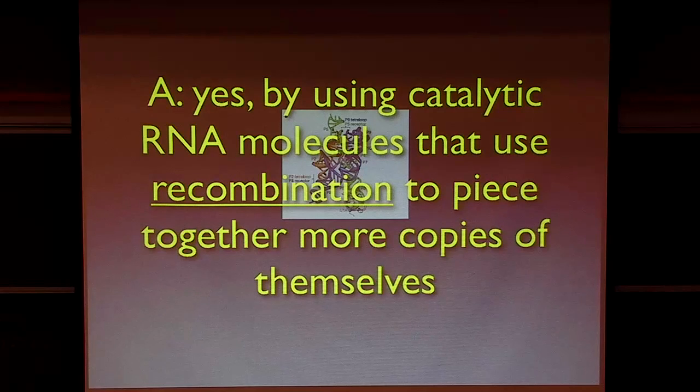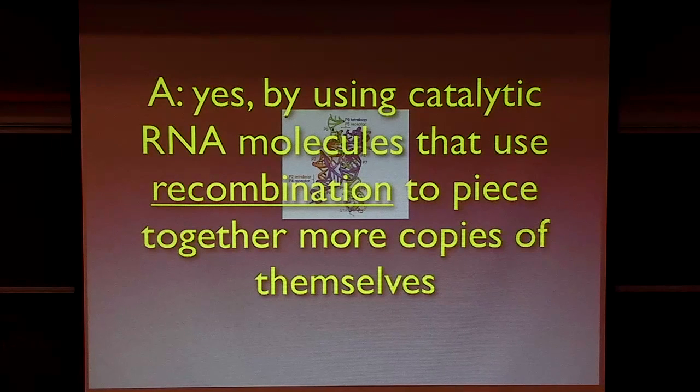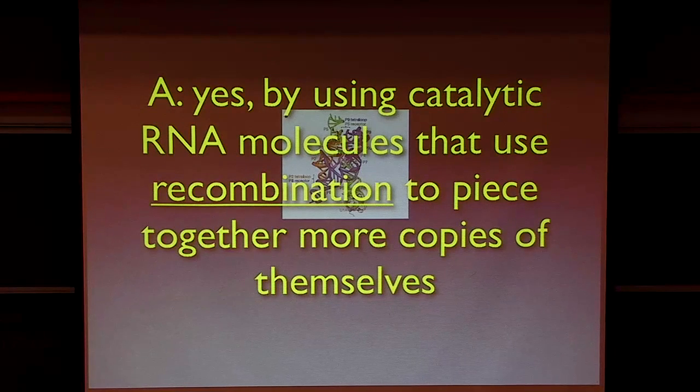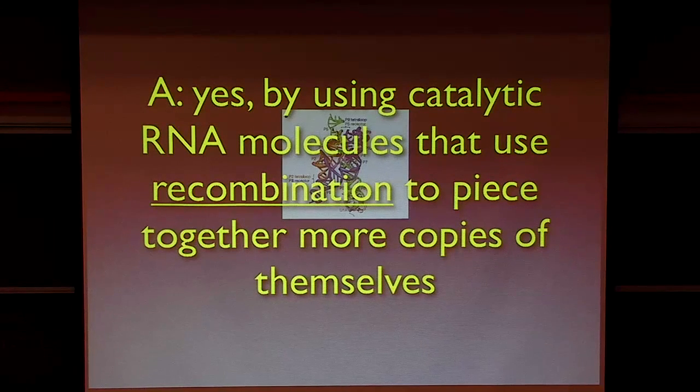And what I'm going to show you real quickly is that by using catalytic RNAs that use the property of recombination, which I will stress over and over again, we can piece together copies of themselves to make a cooperative network. So, cooperation and recombination are the themes of this talk.